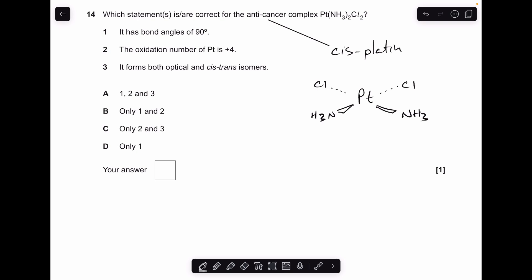Question 14. So this anti-cancer complex is cisplatin. I've drawn it up there. So we'll just run through the statements to see which ones are correct. Bond angles 90 degrees. Yeah, that's right. It's a square planar complex. So it does have those bond angles. Oxidation number of platinum is plus 4. Well, that's wrong. It's actually plus 2 for the platinum. That's because the two chloride ligands are negative 1 each. The ammonia ligands don't have any charge. So the platinum has to be plus 2 to keep the whole thing neutral. It forms both optical and cis-trans isomers. Well, it definitely forms cis-trans, but it can't form optical. So that statement was wrong. So just 1. So D.